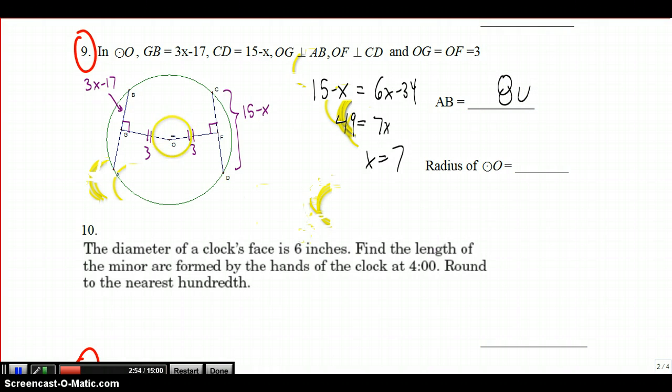And to go further then, we'll draw in that segment. This length is 3, BG was equal to 4, 3, 4, 5, it's a 3, 4, 5 right triangle, so the radius of the circle is 5 units.